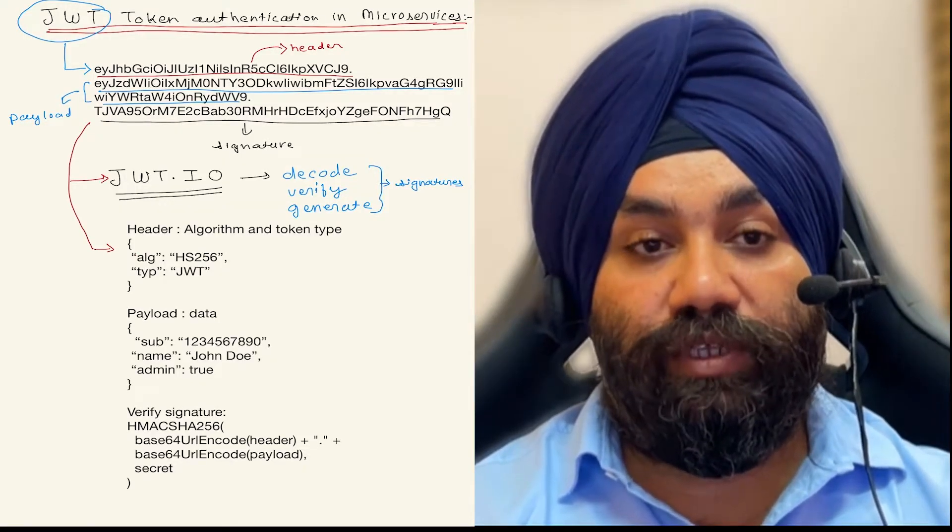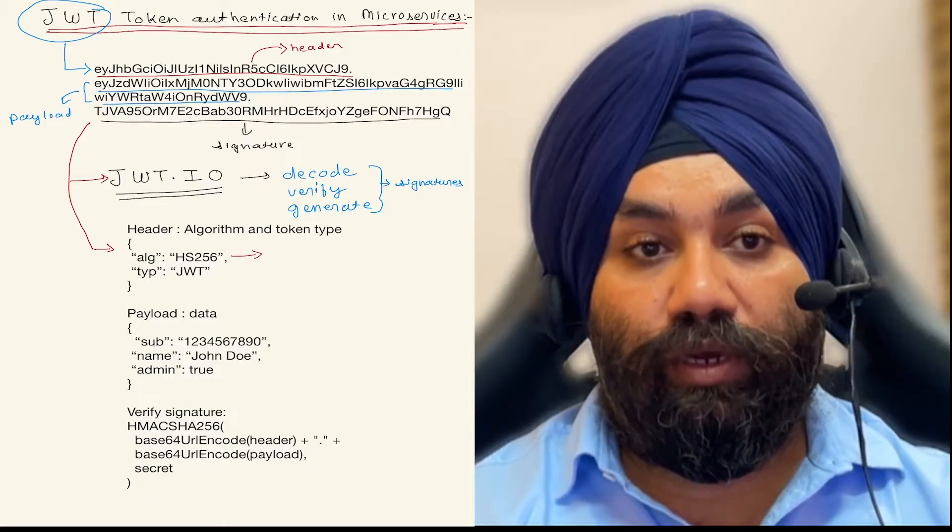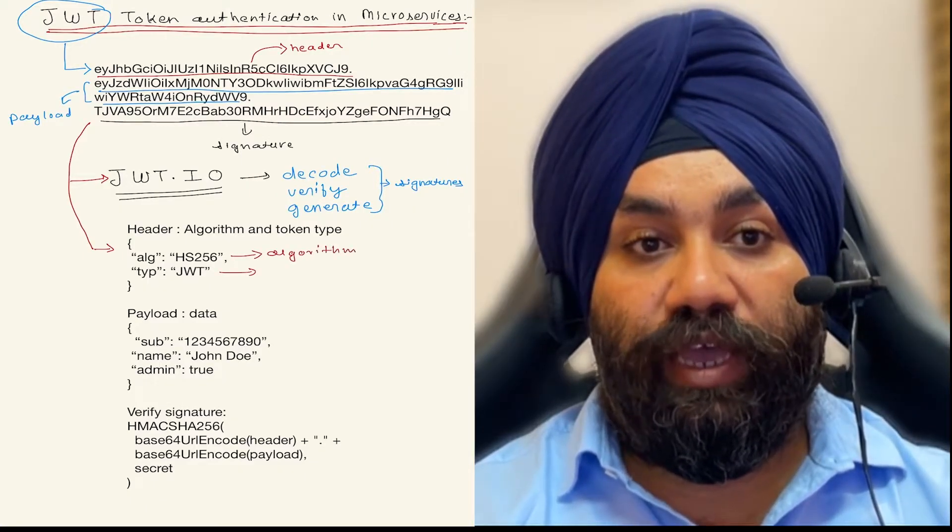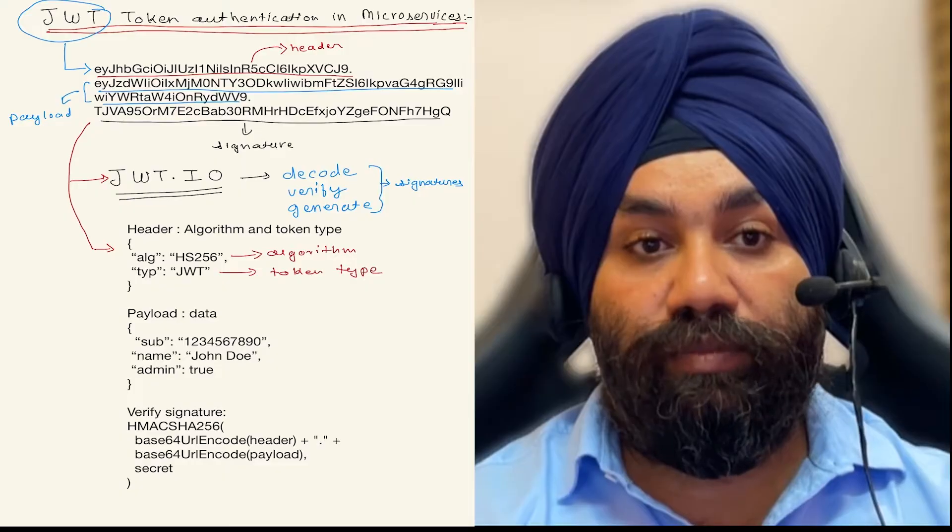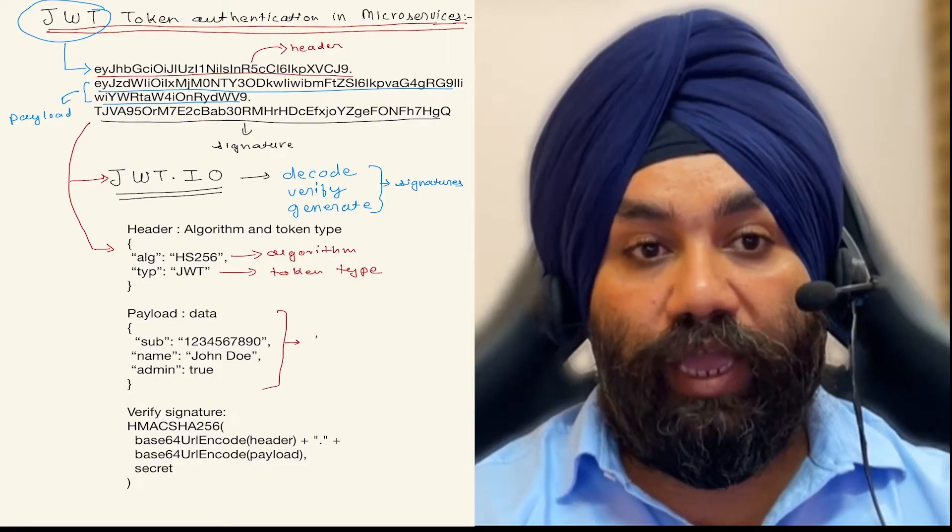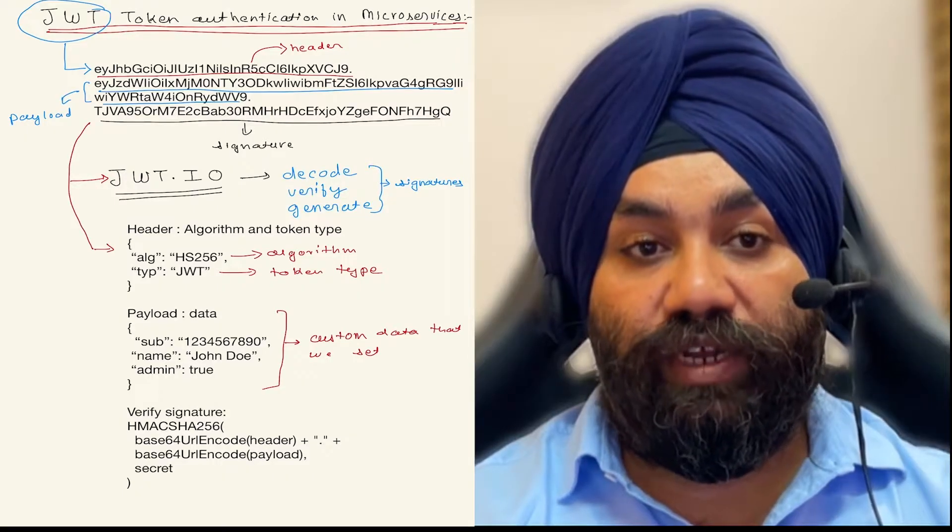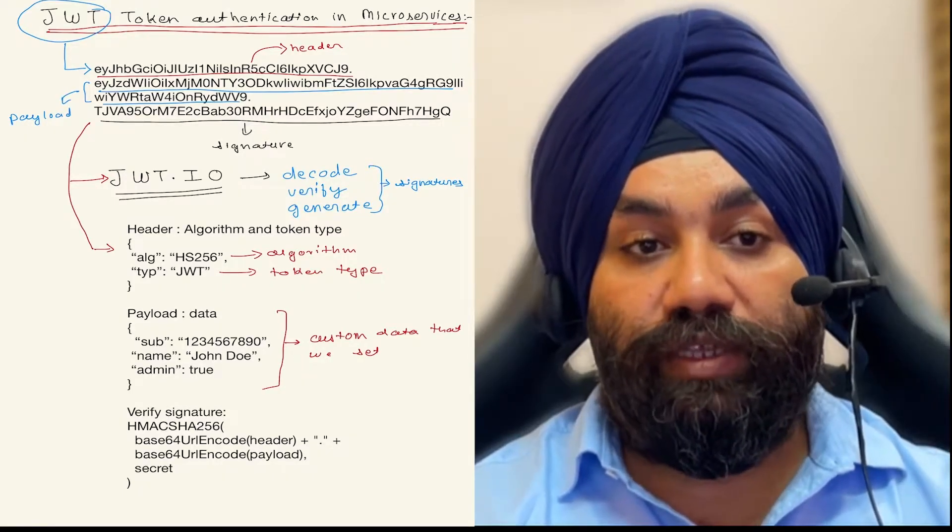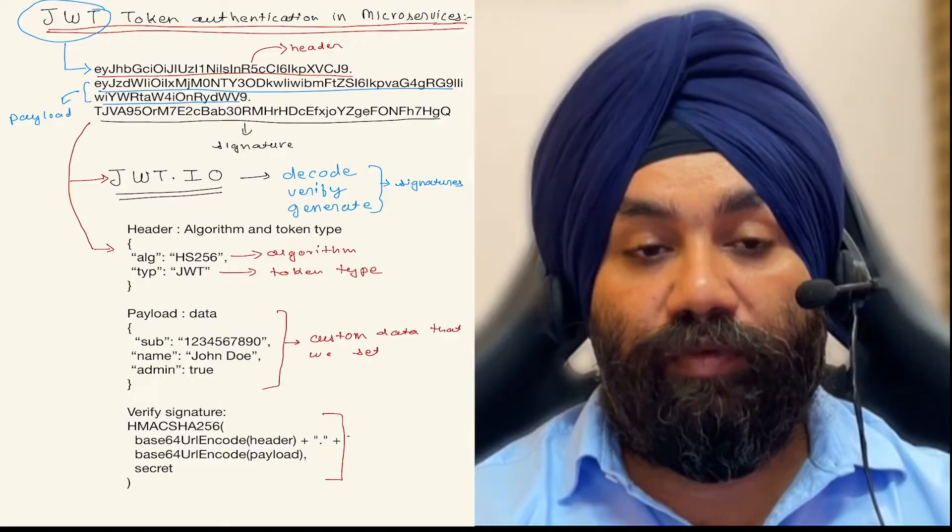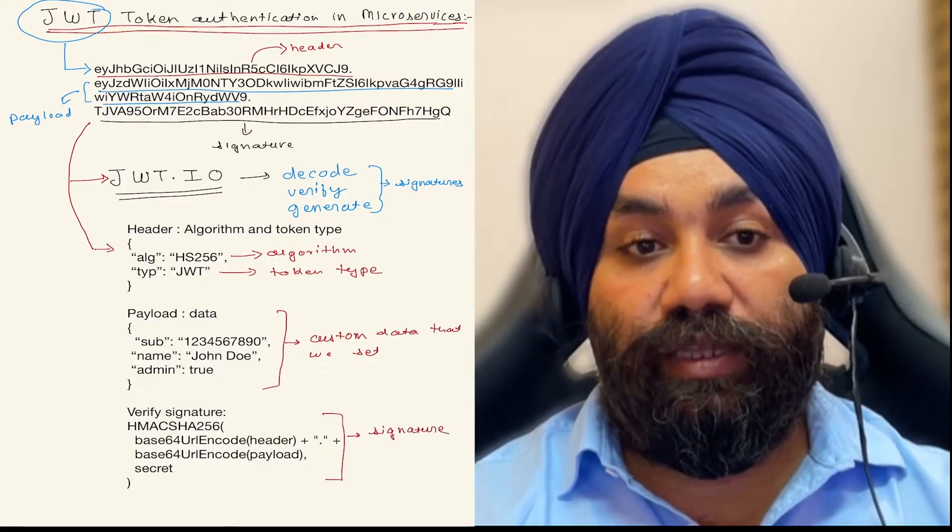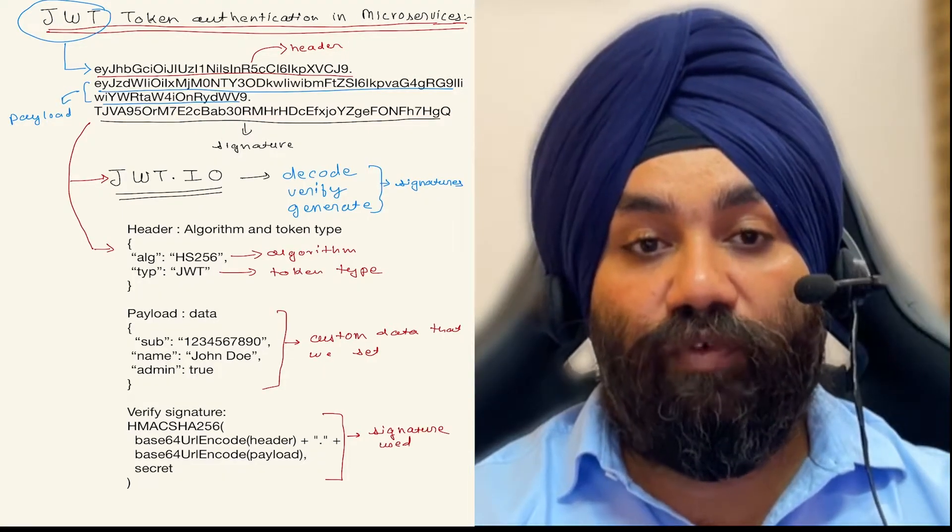This is all the information that is contained in the JWT token. So here you can see HS256 is the algorithm, JWT is the token type, and it contains payload, which is the custom data that we have set inside the JWT token. We can set anything: ID, name, email, whatever you want. And then it contains the signature detail, what type of signature is used to sign this JWT.